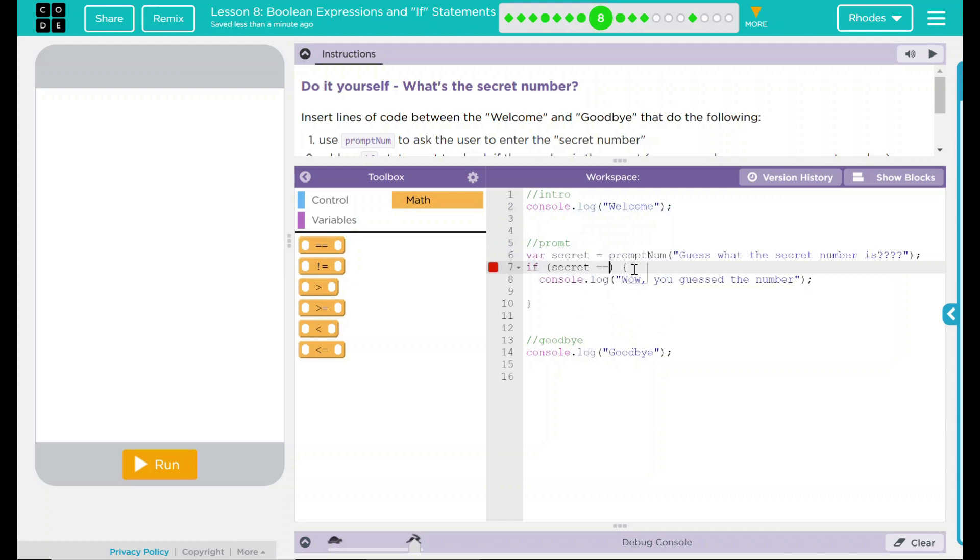Now we have to guess a number. What's a good number? Let's go with my age, 22. Hopefully, when our user enters a number, they'll get 22.